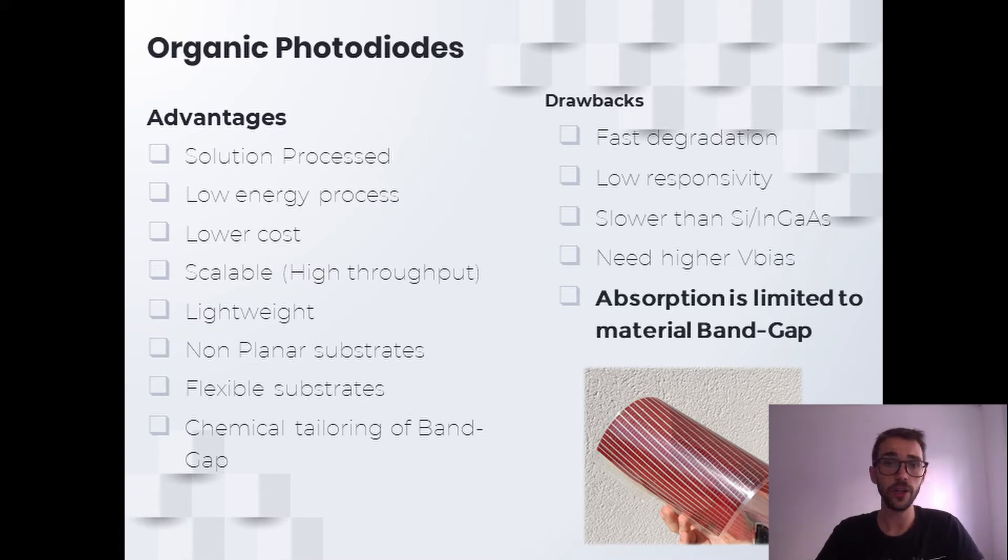However, not everything is perfect with organic photodetectors. They also have some drawbacks, like their fast degradation, their lower responsivity, and their speed when compared with silicon or InGaAs. However, they share a drawback with their inorganic counterparts. Their absorption is limited by their bandgap.